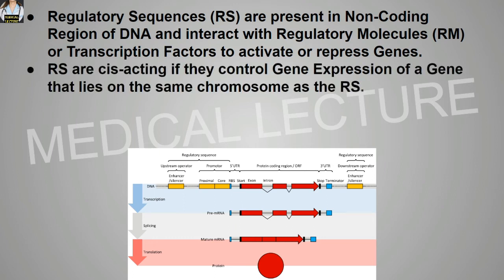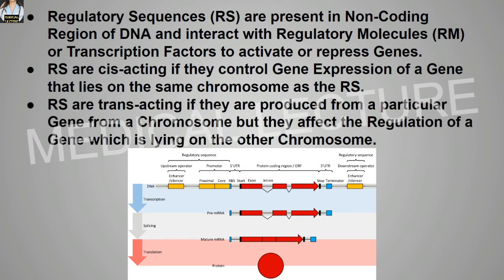Regulatory sequences are cis-acting if they control gene expression of a gene lying on the same chromosome as the regulatory sequence. Regulatory sequences are trans-acting if they are produced from a gene on one chromosome but affect regulation of a gene lying on a different chromosome.